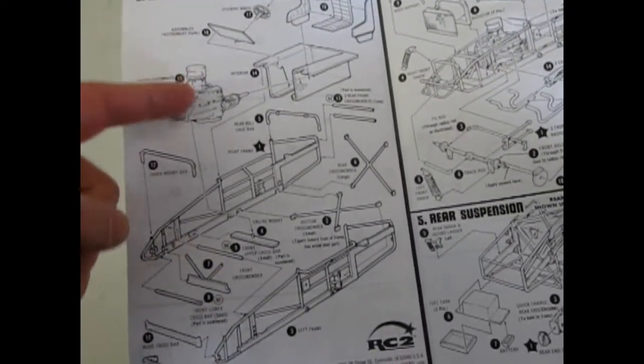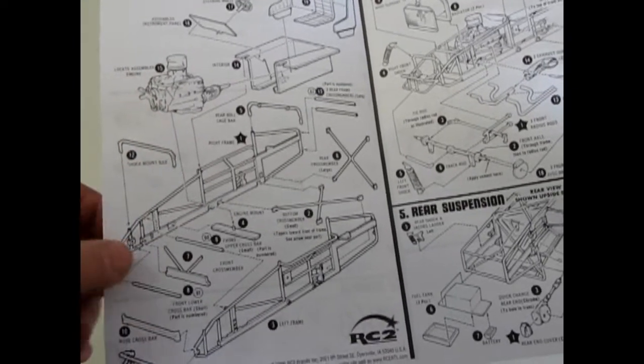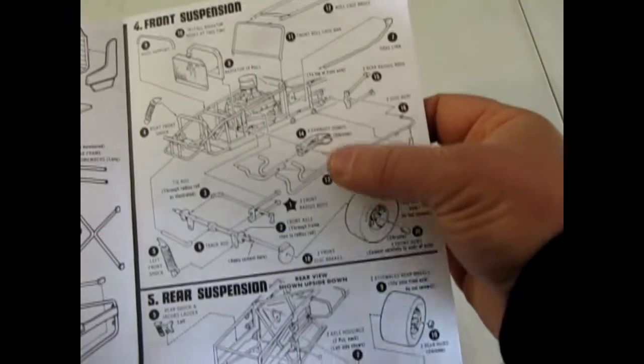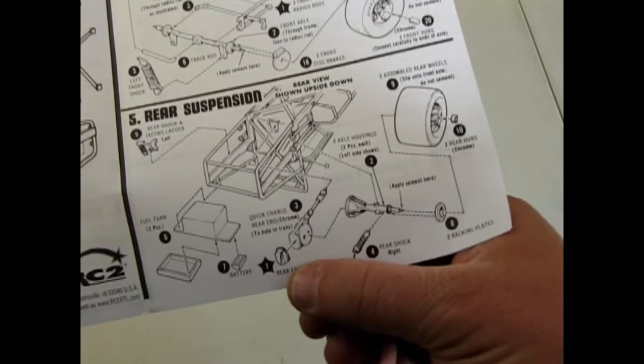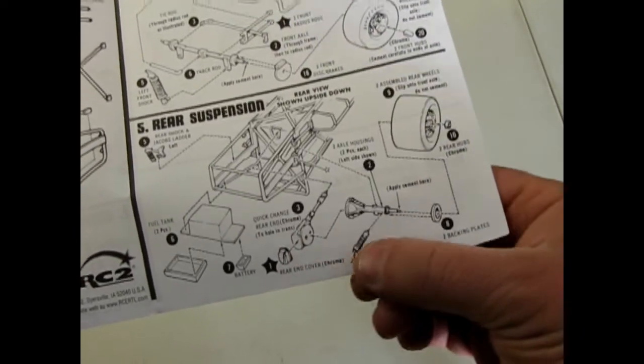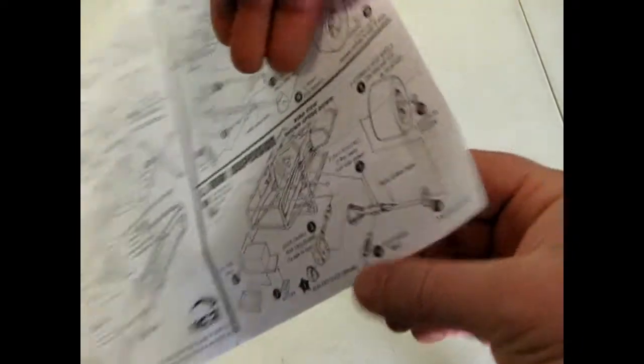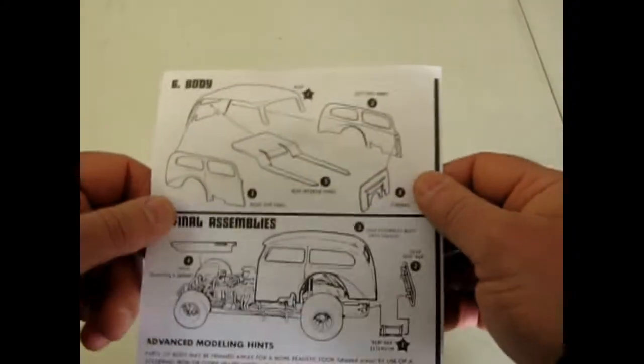So here is an exploded view of the frame in this thing which is really neat and of course there's our engine and everything going in. The rear suspension with a like a six-piece rear axle or even more.